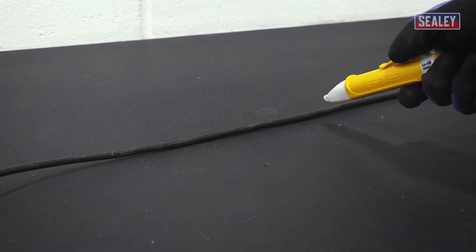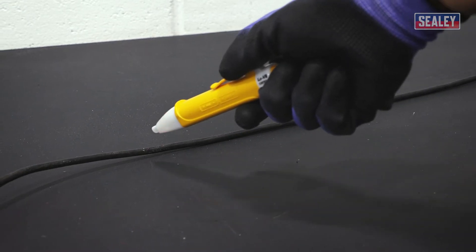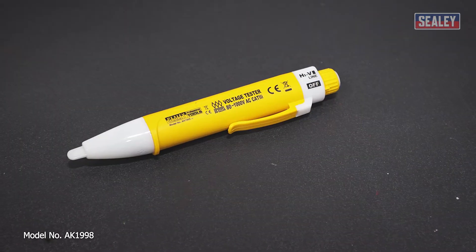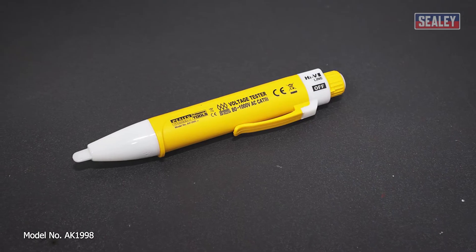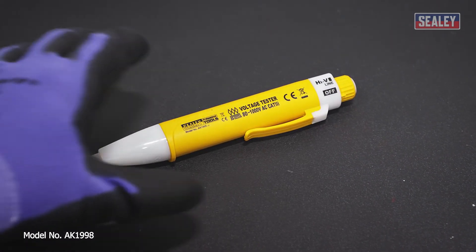Non-contact voltage detectors are a safe way to ensure that wires aren't live without needing to physically touch them. In this video we'll be using the Sealey AK1998, which is an 80 to 1000 volt non-contact voltage detector.